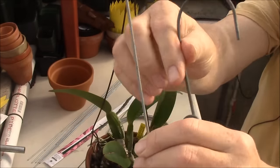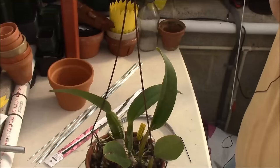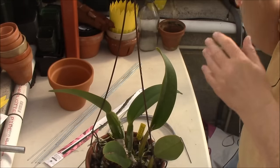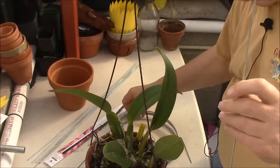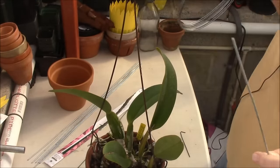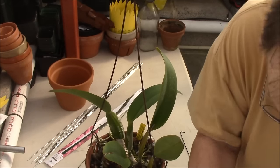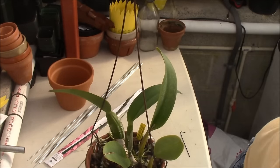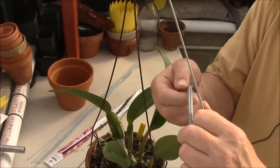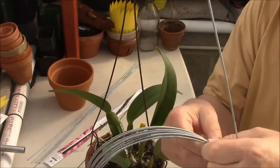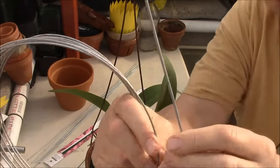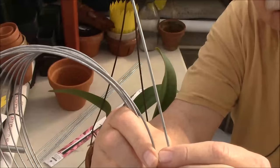Okay, and then the next gauge going down would be 14 gauge and that is this coil of wire here. And if you look at it closely you'll see that it is just a hair smaller.